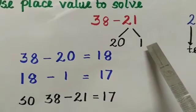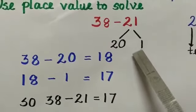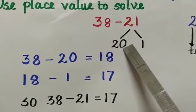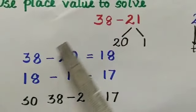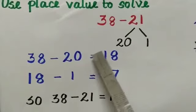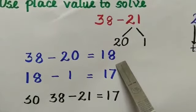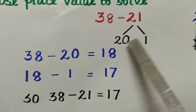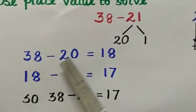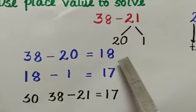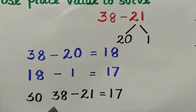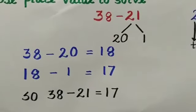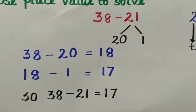One one is nothing but one. So first we will subtract the tens with 38. So 38 minus 20 is equal to 18. Then with this difference subtract the ones. So 18 minus 1 is equal to 17. So the final answer is 38 minus 21 is equal to 17.